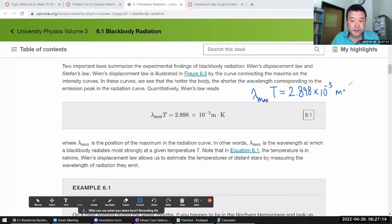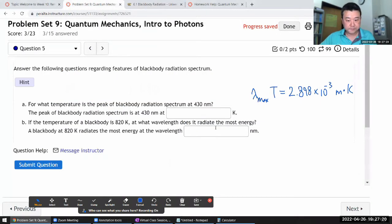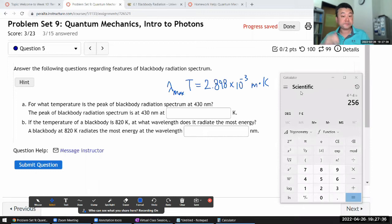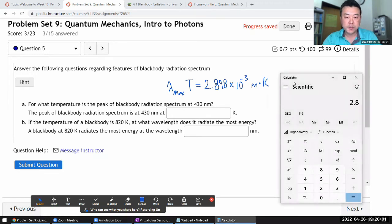With that available, I can just plug numbers into the calculator. So the peak of blackbody radiation—I'm given the peak wavelength and asked for temperature, so I'm going to take this constant and divide by my peak wavelength. So my constant is 2.898 times 10 to the power of minus 3 divided by the wavelength 430 nanometers, 430 times 10 to the power of minus 9.